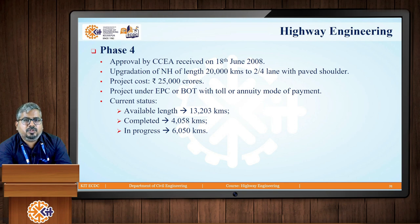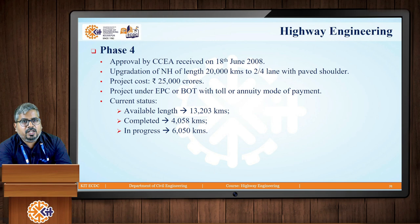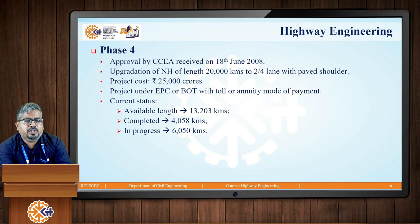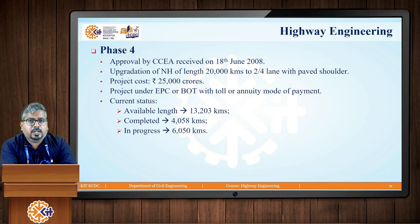Next is Phase 4. In this case, the approval from CCEA was received on 18th June 2008. The main aim was to upgrade national highways of a length of 20,000 kilometers to a two-lane or four-lane highway along with paved shoulders. The estimated project cost was rupees 25,000 crores. The projects under Phase 4 came under the EPC or BOT with toll or annuity mode of payments.